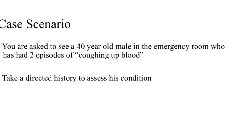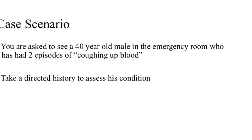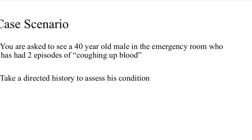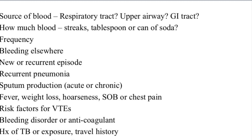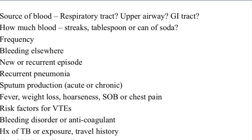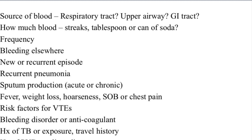If the patient is stable, then we can go on to take a history. In taking our history, we want to earlier on distinguish between a respiratory tract and a GIT tract bleed. Asking important questions like whether the patient had a cough prior to the onset of bleeding, or whether the patient vomited prior to the onset of bleeding, are important and would direct our history and narrow down our differential diagnosis.